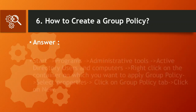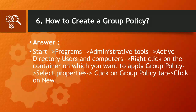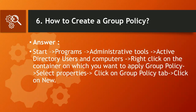Question 6: How to create a group policy? Answer: Start > Programs > Administrative Tools > Active Directory Users and Computers > right-click on the container on which you want to apply group policy > select Properties > click on Group Policy tab > click on New.